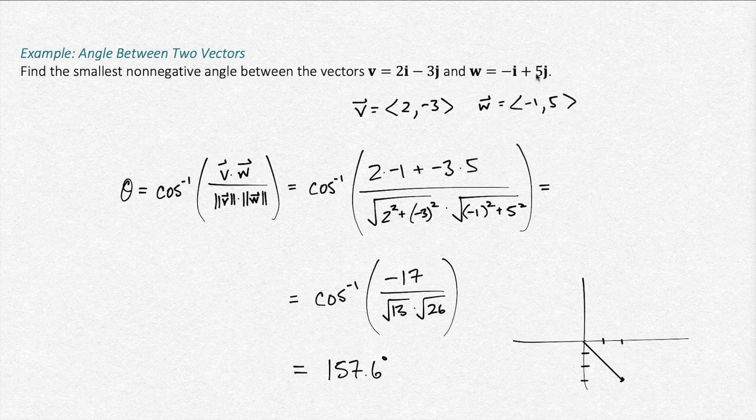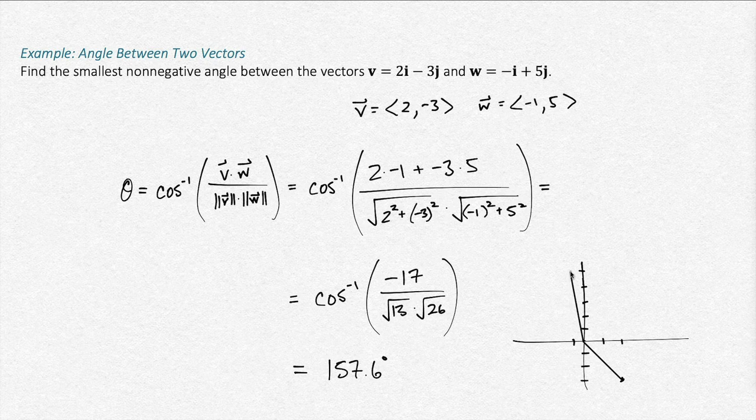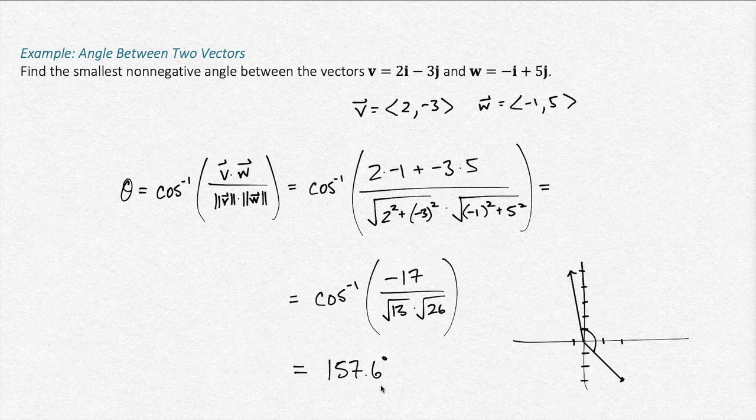And then W is negative 1, 5. Negative 1, 1, 2, 3, 4, 5. There are my angles. That seems reasonable, right? This smallest angle between those being 157.6, that seems reasonable.